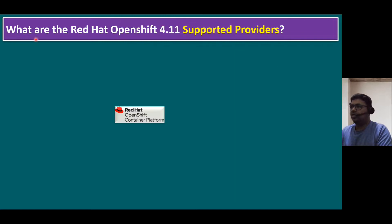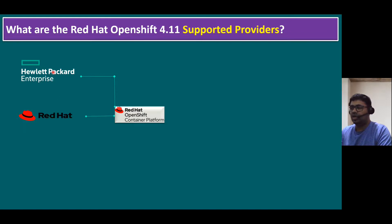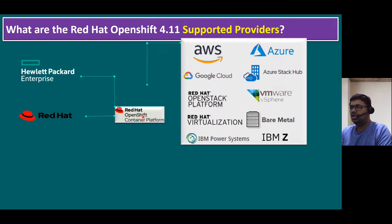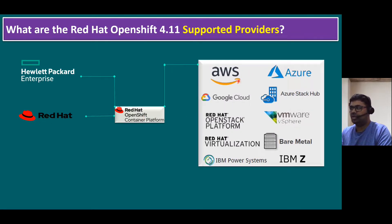Now, what are the Red Hat OpenShift 4.11 supported providers? Red Hat OpenShift container platform supports bare metal hardware like HPE and Hewlett Packard Enterprise, or other hardware vendors like IBM. To run it on bare metal, you install a Red Hat operating system like RHEL 9 or 8 series, and on top of that run OpenShift. Red Hat also provides RHEL CoreOS, which can also run on bare metal with OpenShift on top.